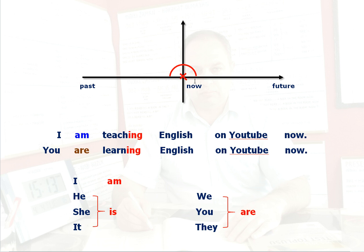Let's look at the examples. I am teaching English on YouTube now — I am doing it right now at the time of speaking. You are learning English on YouTube now from me. Both of these actions are happening right now at this moment, at the time of speaking. The main rule of present continuous is that things are happening right now at the time of speaking.